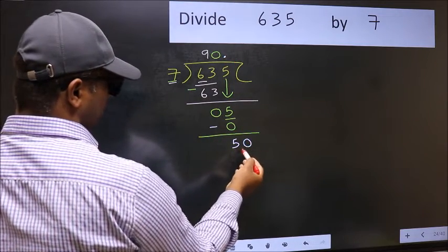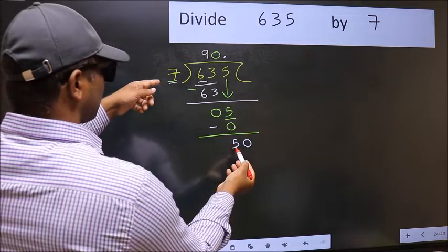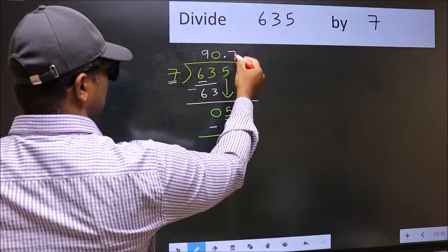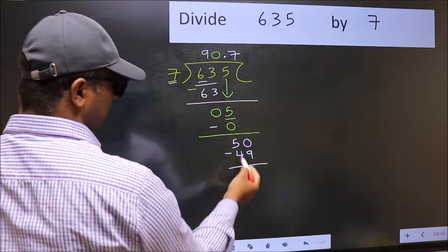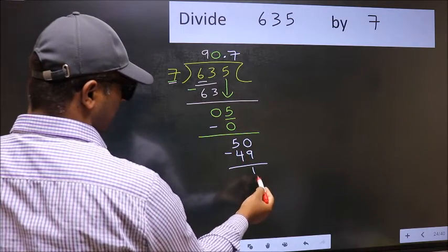So now you can put dot and take 0, so 50. A number close to 50 in 7 table is 7 sevens, 49. Now you should subtract. 50 minus 49, 1.